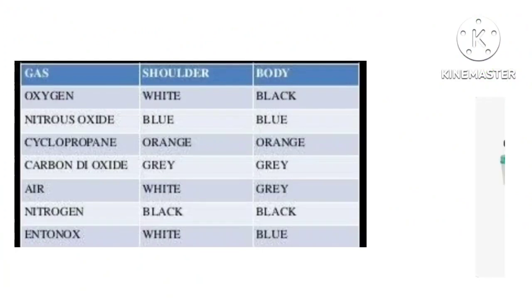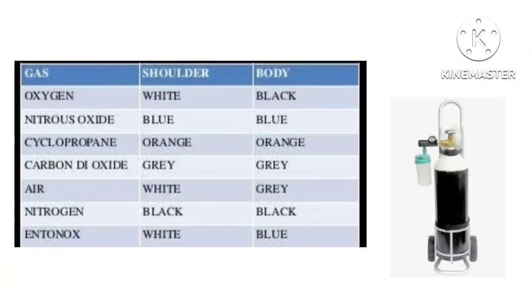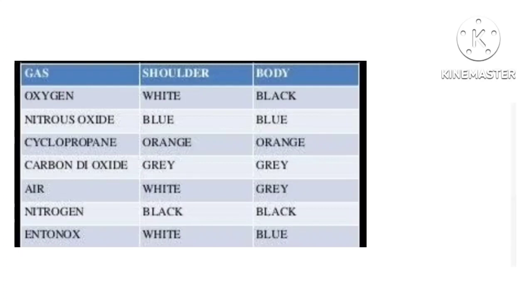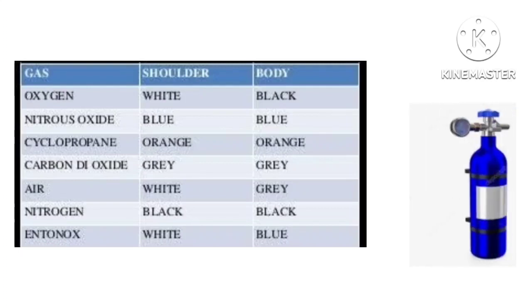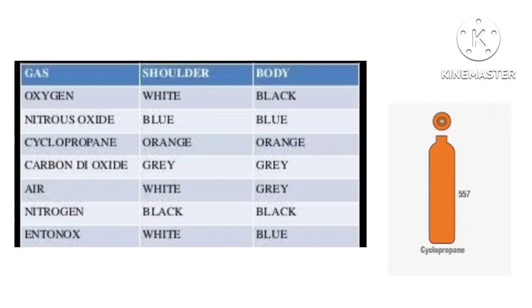Now I am going to show you some cylinders and their color coding. Cylinders are color coded for easy identification. In the UK, oxygen cylinders have a black body and a white shoulder. Second, nitrous oxide cylinders are completely blue. Third, cyclopropane has an orange color.